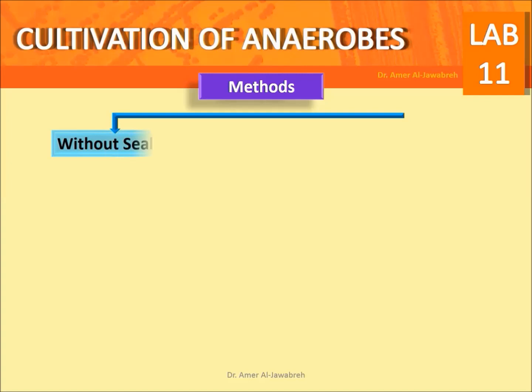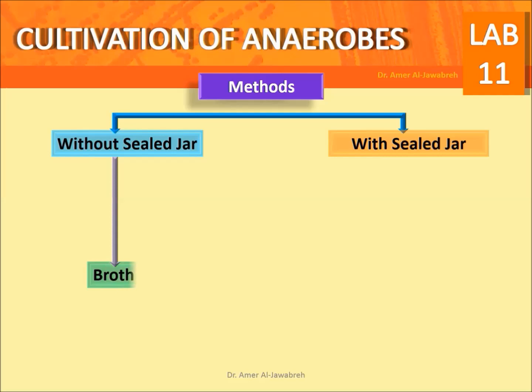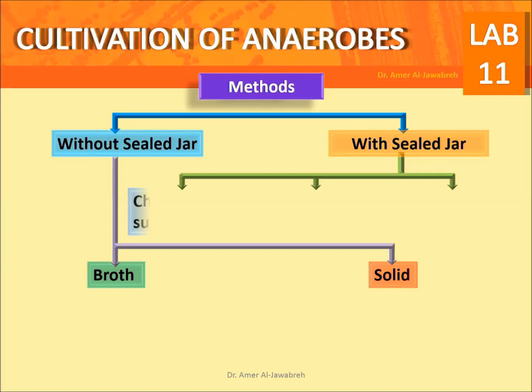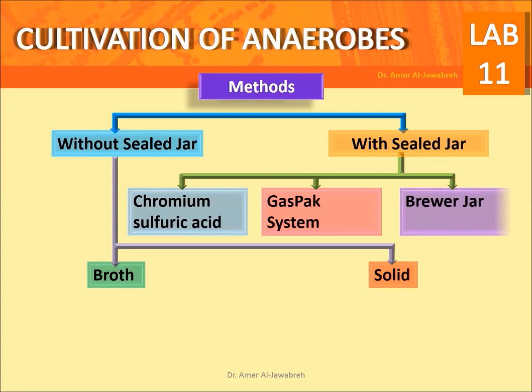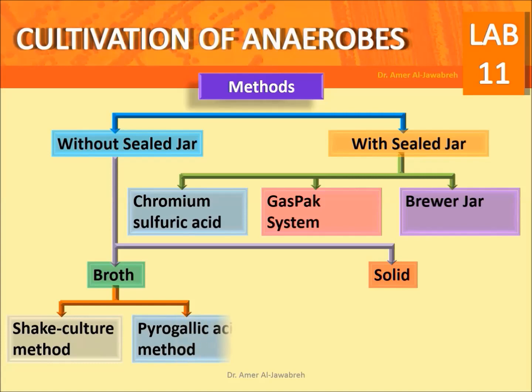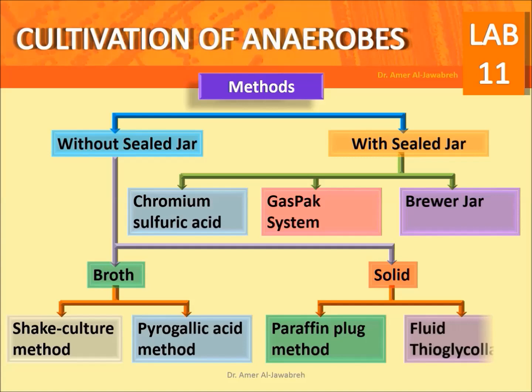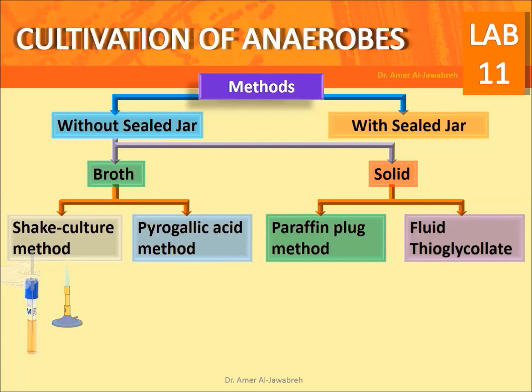Methods for anaerobic cultivation are divided into: without seal jar and with seal jar, using broth or solid media. These include the chromium sulfuric acid method, gas pack system, brewer jar, shake culture method, and pyrogallic acid method. Shake culture method: inoculate multi-nutrient agar, shake, cool, and incubate, then check for the position of growth in the tube.